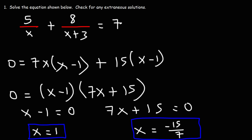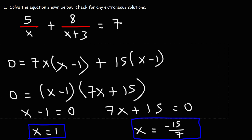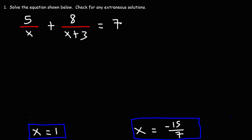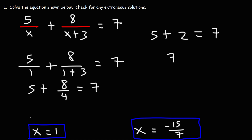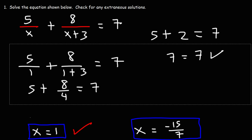So those are the two potential solutions. Let's plug in x equals 1 to the original equation: 5 over 1 plus 8 over (1 plus 3) equals 7. 5 divided by 1 is 5, and 1 plus 3 is 4, so 8 divided by 4 is 2. 5 plus 2 is 7, and 7 equals 7. So this is a true solution — it is not an extraneous solution.